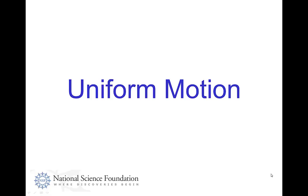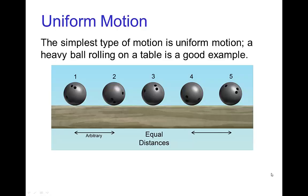Uniform motion is the simplest type of motion. An example would be something like a heavy bowling ball rolling across the floor. What makes uniform motion very simple is because the speed is constant, and the spacing is constant — so between each of the key poses we have the same distance or spacing.